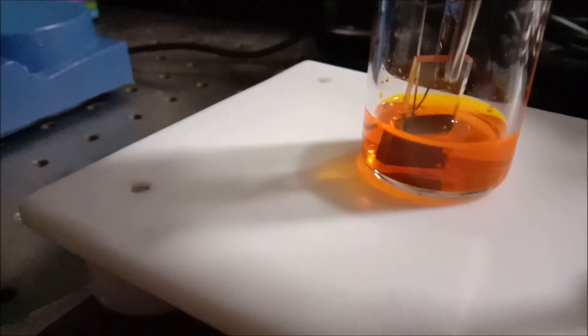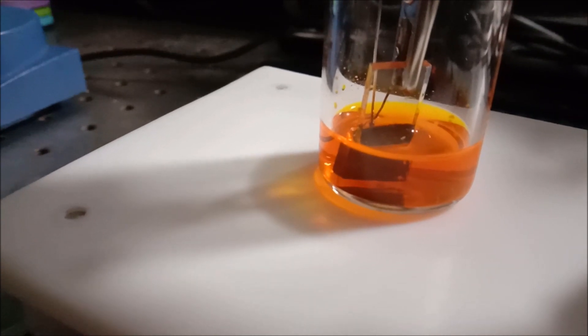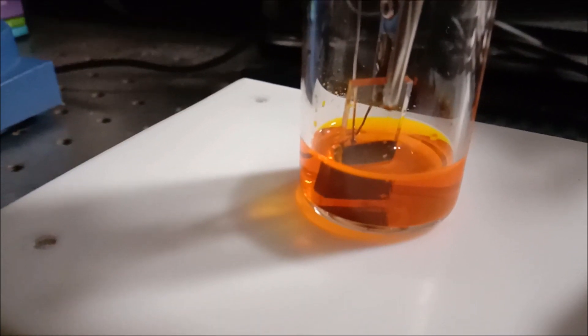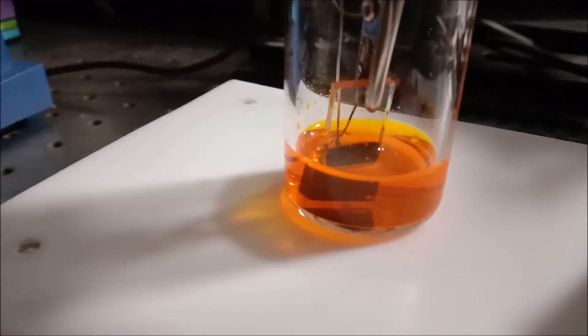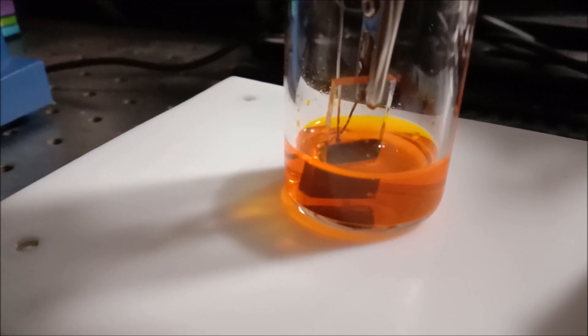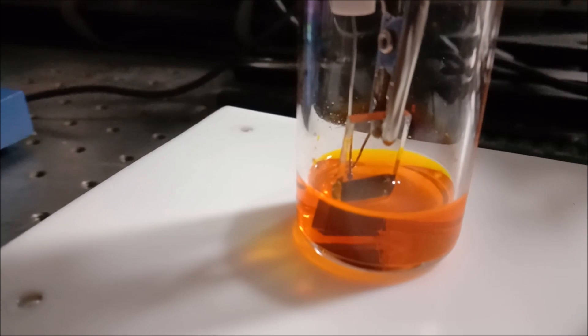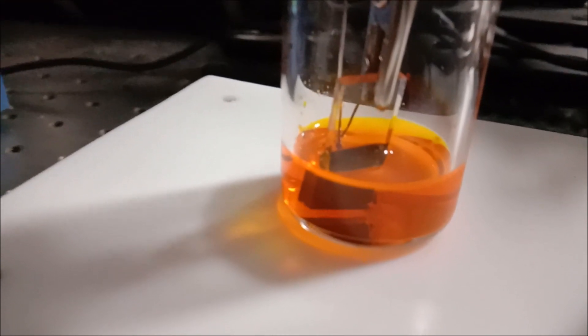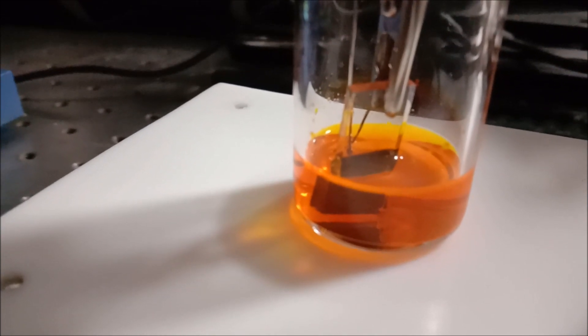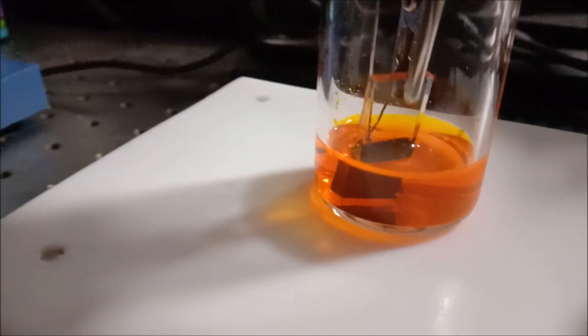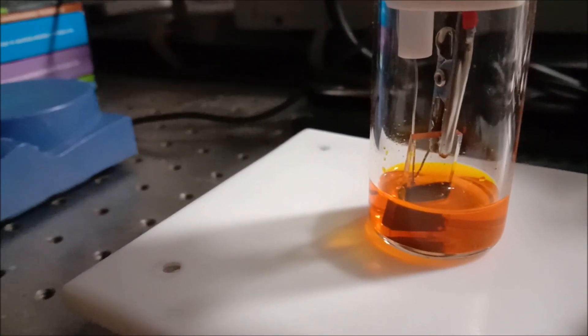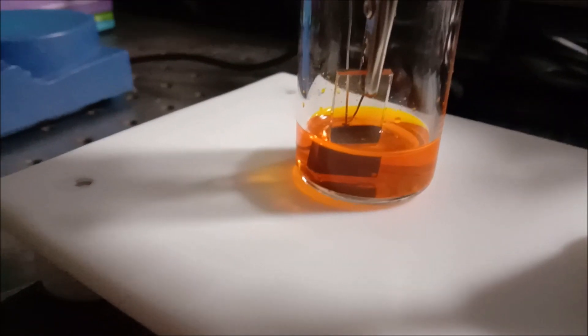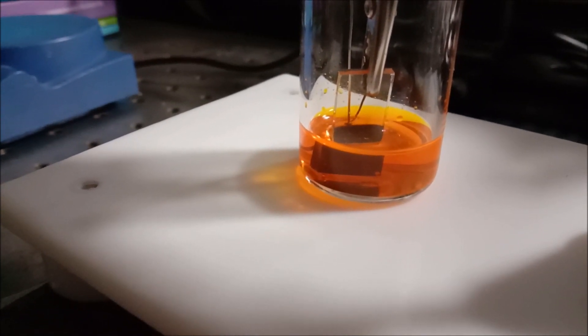We are performing now the chronoamperometry. If you don't have that amperometric IT curve you can still perform that electrodeposition using chronoamperometry. As you can see here it is a fast and effective technique. If you want to do electrodeposition or electropolymerization, I think you can use amperometric IT or chronoamperometry.